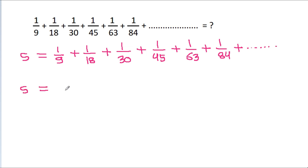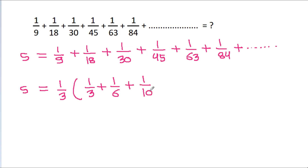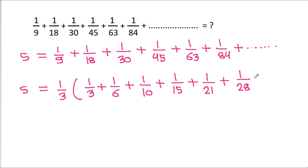And S is equal to — we can take 1 by 3 common, and it will be 1 by 3 times the sum of 1 by 3, plus 1 by 6, plus 1 by 10, plus 1 by 15, plus 1 by 21, plus 1 by 28, plus and so on.